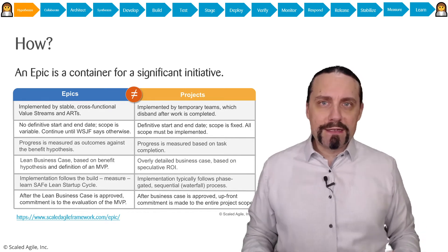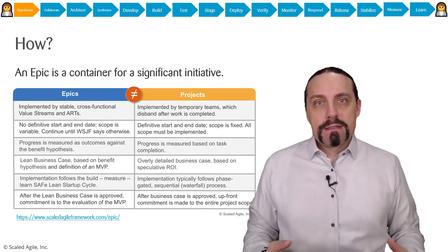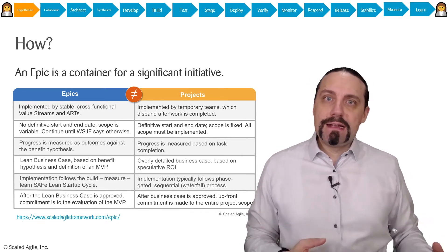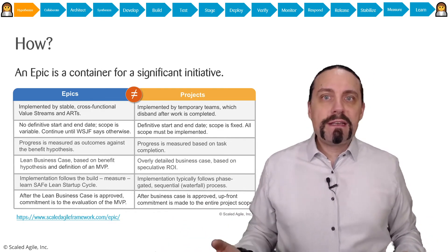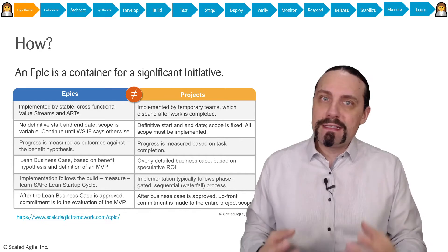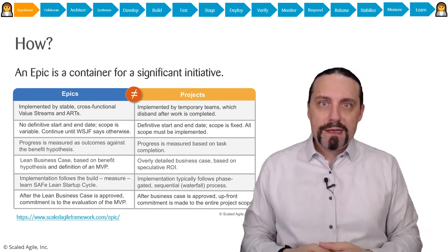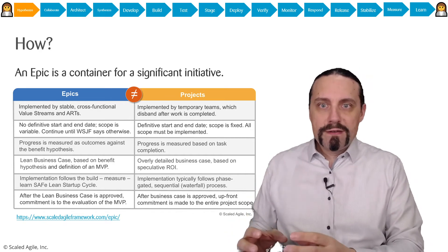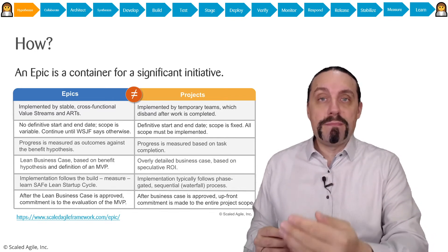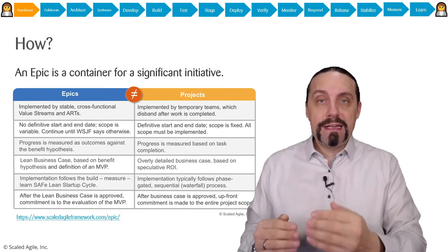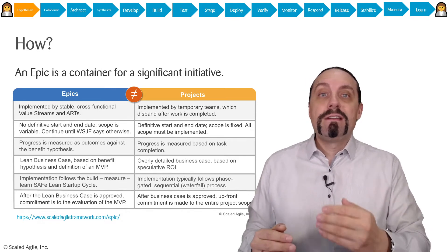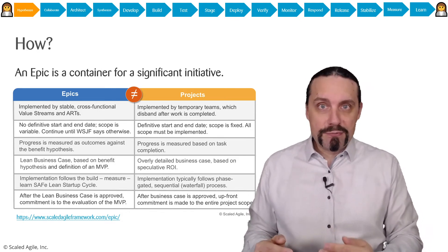First of all we need to create an epic. Why an epic and not a project? So an epic and a project are two different things. An epic is a container for a significant initiative. And what we do there is we define the hypothesis behind that epic and then we will create an MVP which validates this hypothesis.